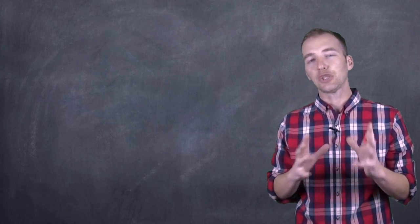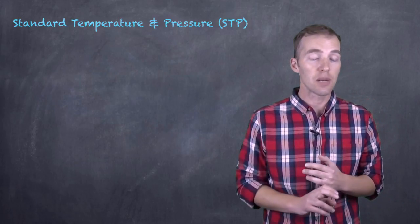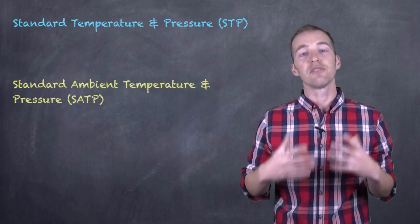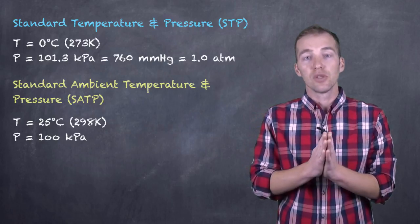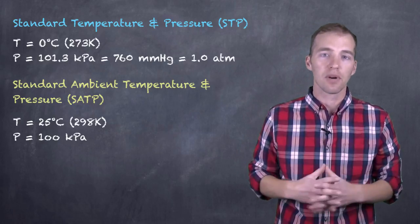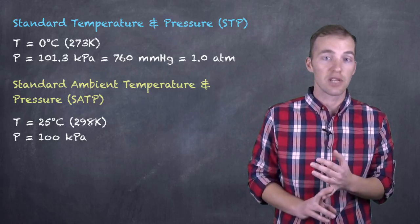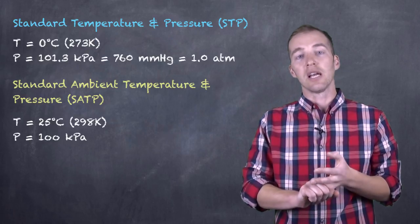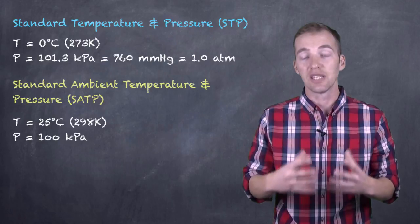Now we have one little shortcut that we can sometimes use and that is when gases are at standard temperature and pressure or standard ambient temperature and pressure. That is a set of standard conditions that scientists have sort of come up with to test different various properties and different various chemical reactions. And so they've assigned standard temperature and pressure and standard ambient temperature and pressure as a couple of combinations of temperature and pressure under which reactions can take place.